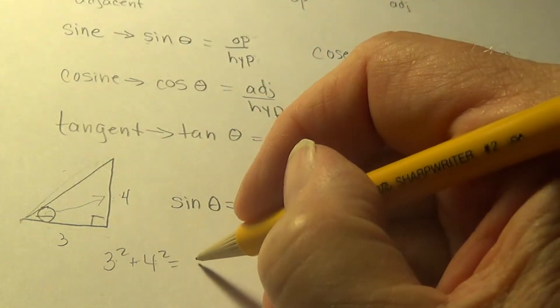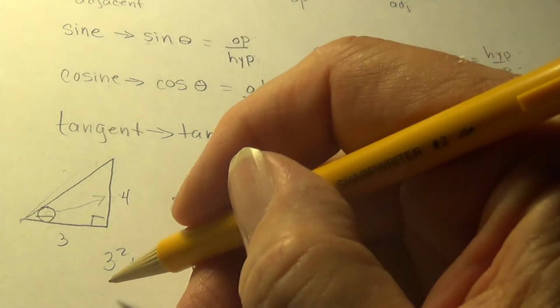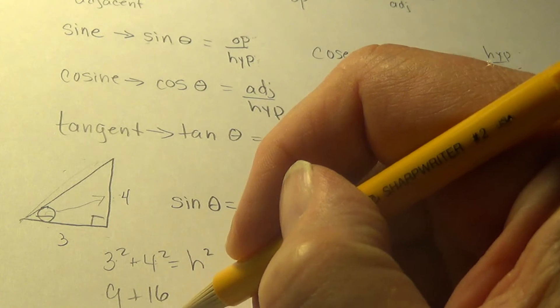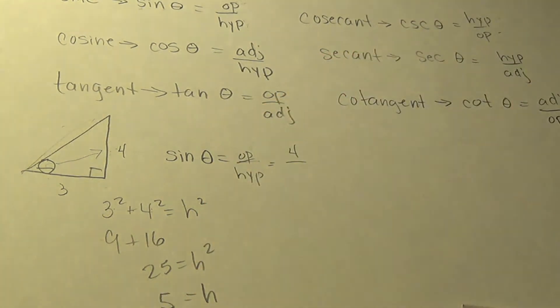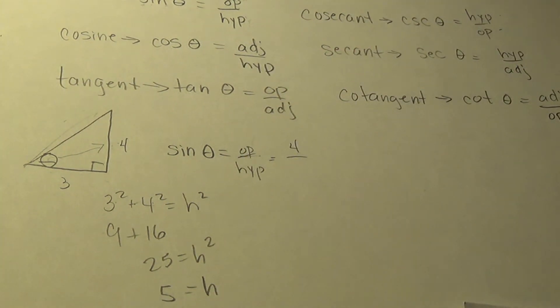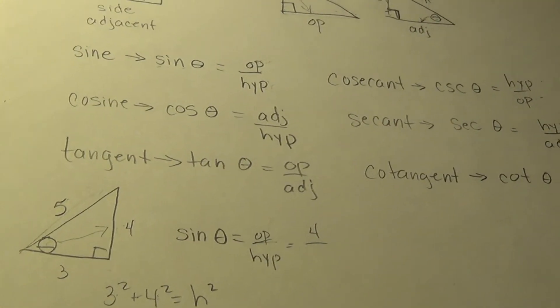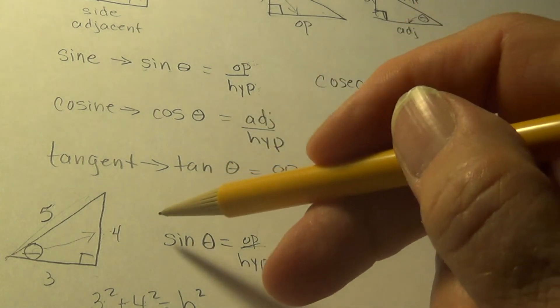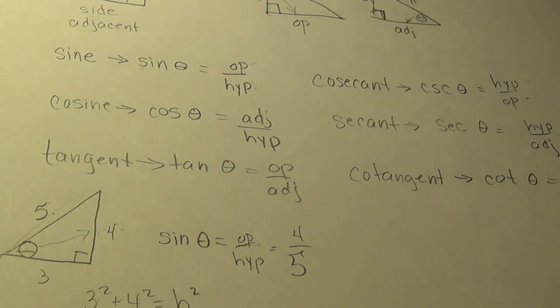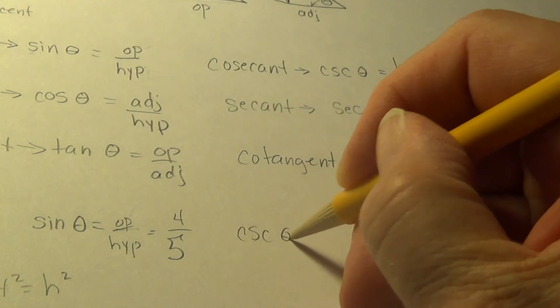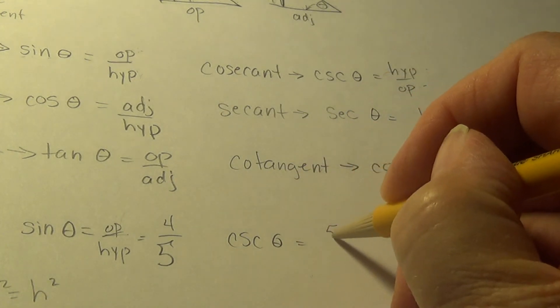A squared plus B squared equals the hypotenuse squared or C squared. That's nine and sixteen. Twenty-five equals the hypotenuse squared. So the hypotenuse is five. When you take the square root, you find the hypotenuse to be five. Now I can go back and finish. The sine of that angle, then, is opposite over hypotenuse, four-fifths. Cosecant is the flip of that. It's going to be hypotenuse over opposite, so it's just going to be five over four.